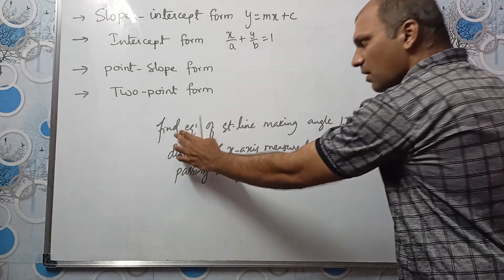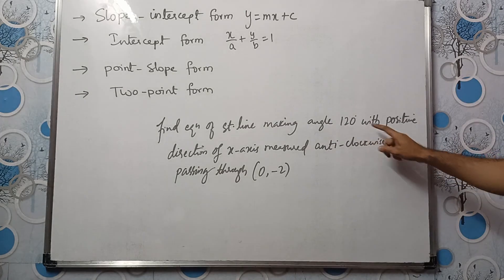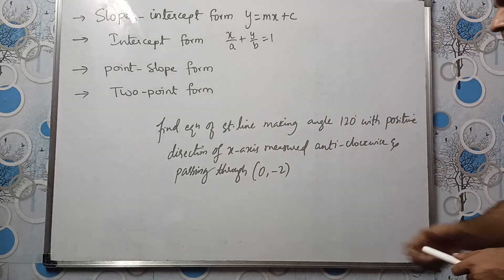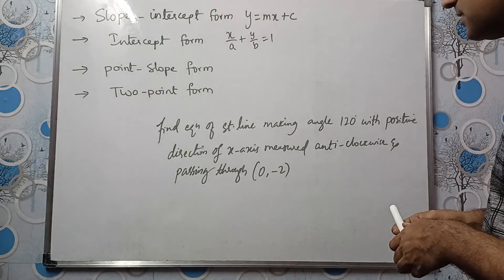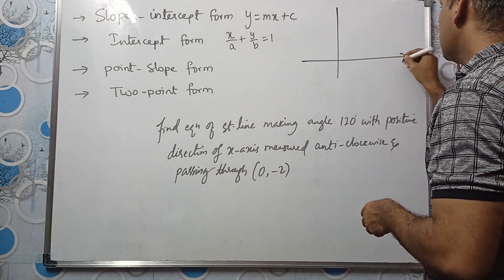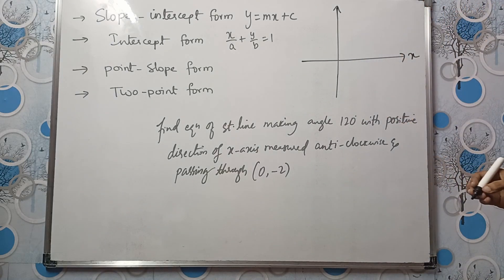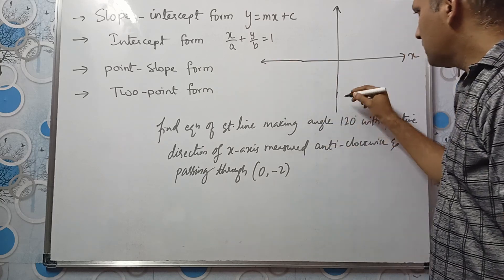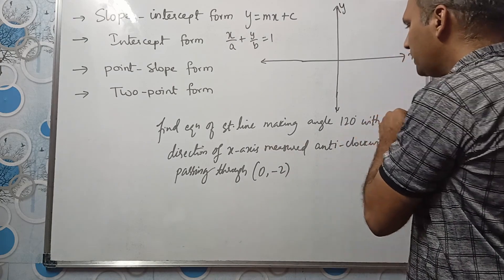Problem: Find the equation of a straight line making an angle of 120 degrees with the positive direction of the x-axis measured anti-clockwise and passing through (0, -2). We draw x-axis and y-axis. The straight line makes 120 degrees measured from x-axis anti-clockwise — greater than 90 degrees, so the line tilts this way.